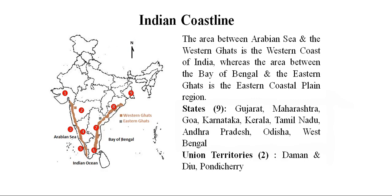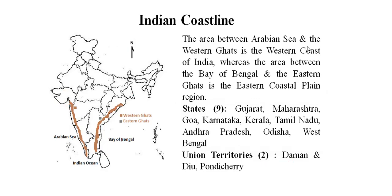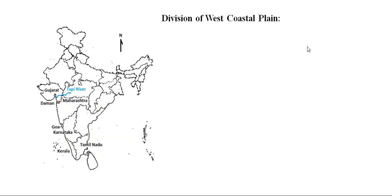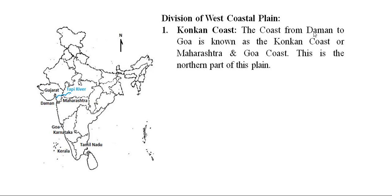Along with the nine states, we also have two important union territories under the Indian coastal plain: Daman & Diu and Pondicherry. Diu is in one part, Daman in another, and parts of Pondicherry lie within the Tamil Nadu region. So under the Indian coastal plain we have nine states and two union territories.